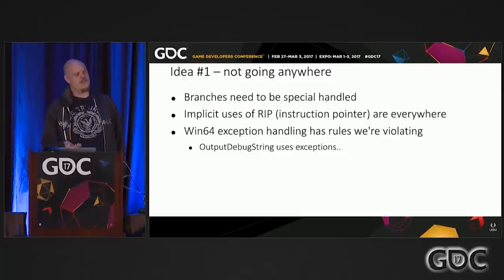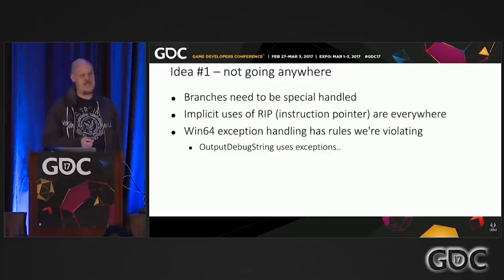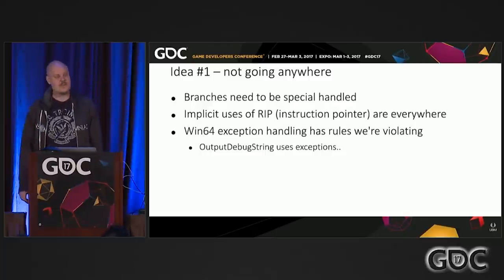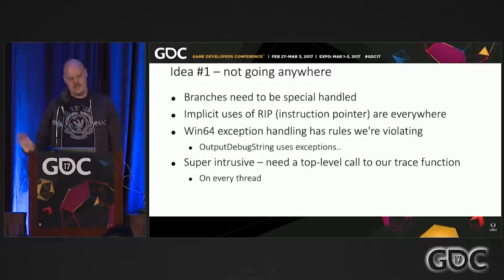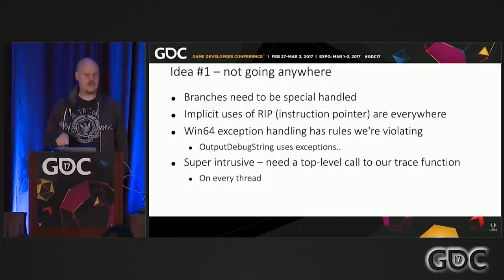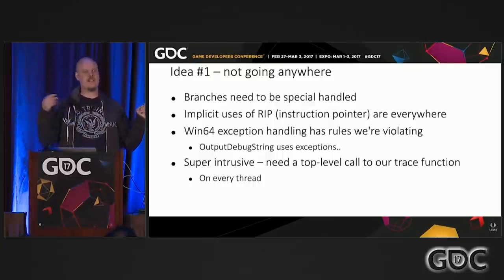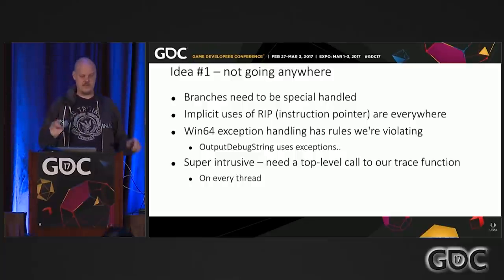On top of this, we're also violating the Win64 ABI because in Win64, every non-leaf function is associated with a stack unwinding data block. If you don't have that block and you take an exception, your program just dies — there's no fixing that. You might think that's only if you divide by zero, but if you've used OutputDebugString or other Win32 internal things, they use exceptions internally. Even if you fixed all those problems, it's still a pretty intrusive approach — everyone would have to opt in to being traced.